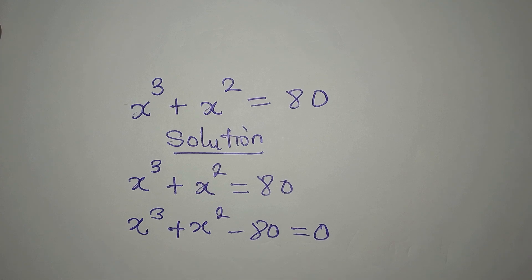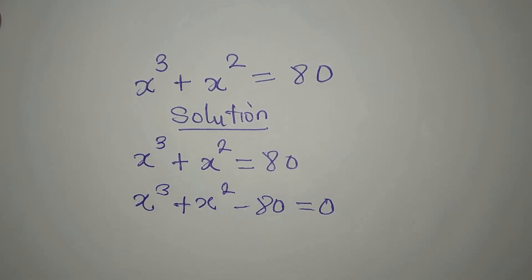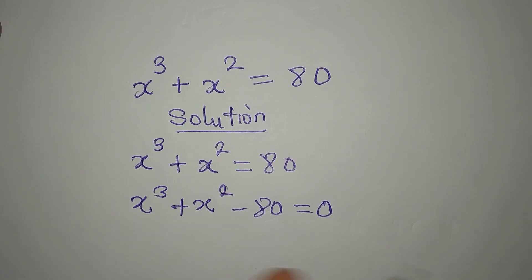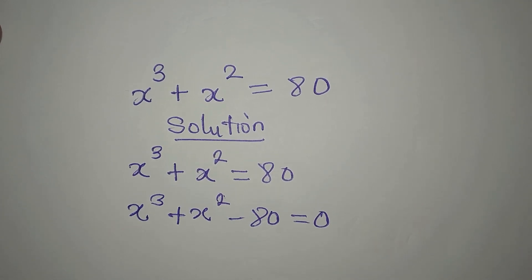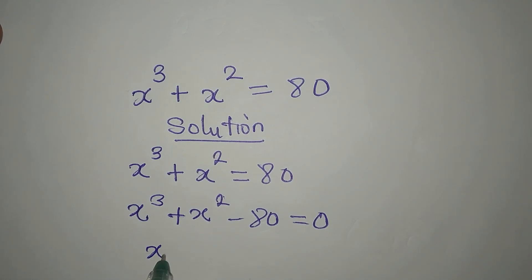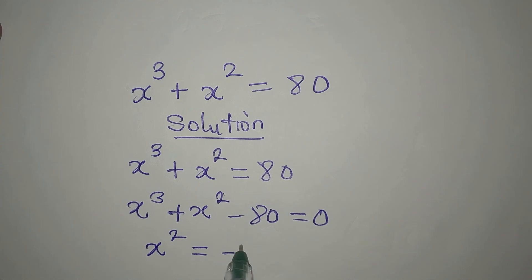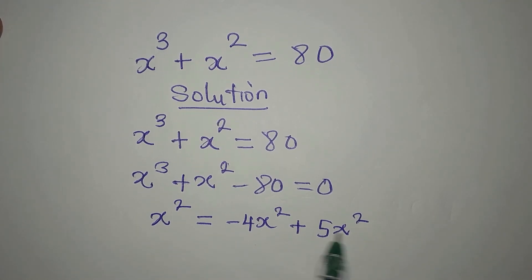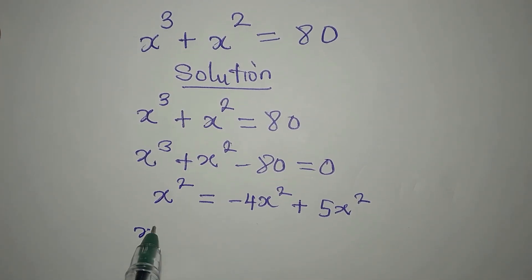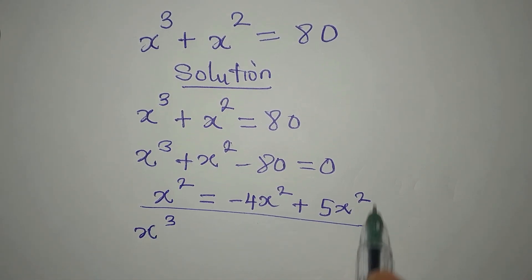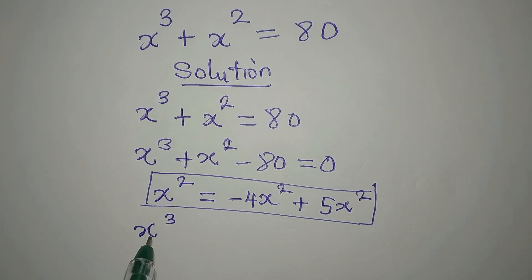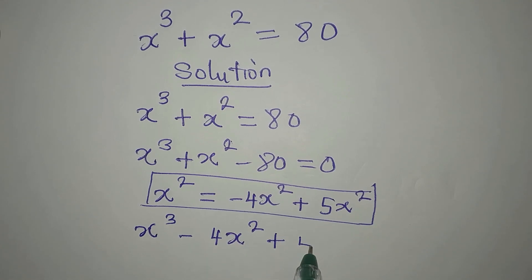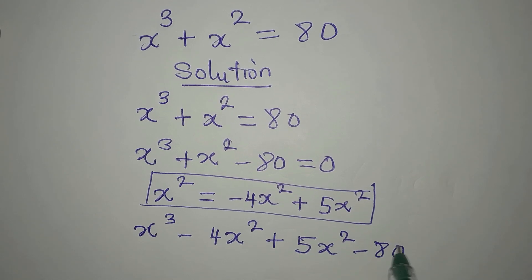If you look at these three terms, nothing is common to all three of them. But the middle term can be broken into two parts in a way that allows us to factorize and find common factors. The middle term x² can be rewritten as -4x² + 5x². So we now have x³ - 4x² + 5x² - 80 = 0.